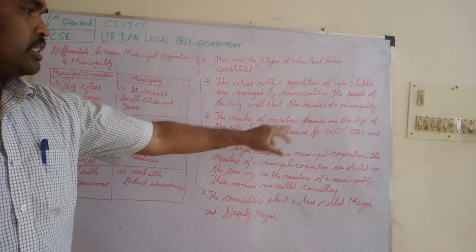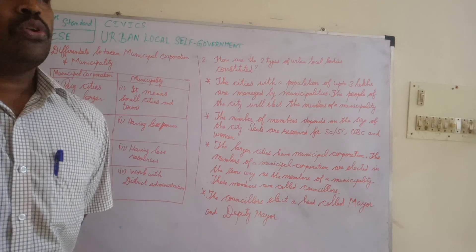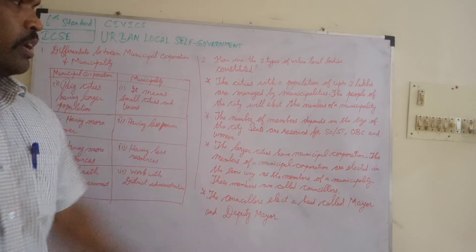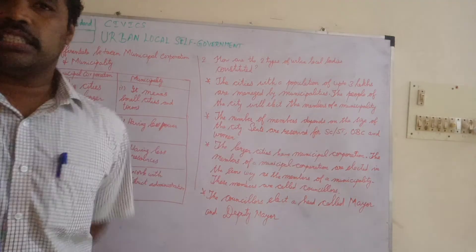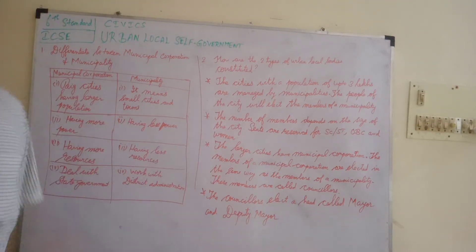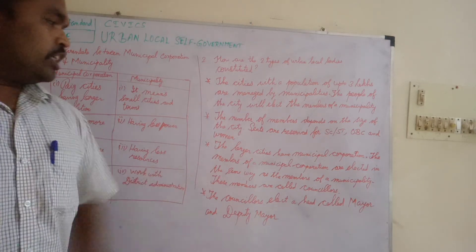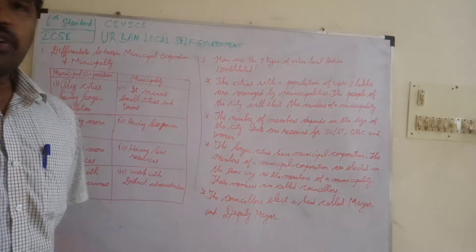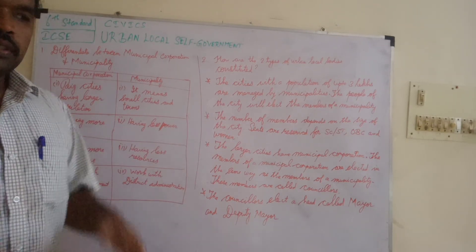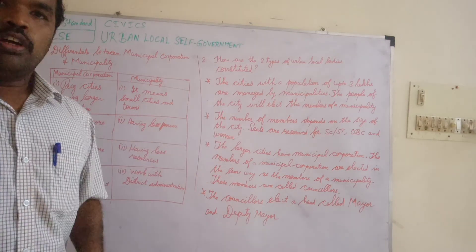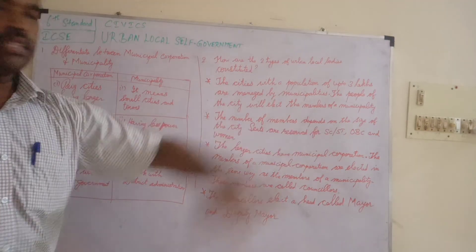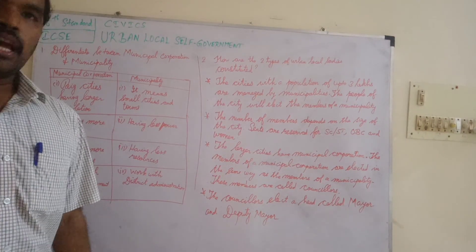The people of the city elect the members of a municipality. The number of members depends on the size of the city. Depending on population, seats in each city are reserved for SC, ST, OBC, and for women. Municipal corporations are elected in the same way as members of municipality — seats are reserved for SC, ST, OBC, and women.